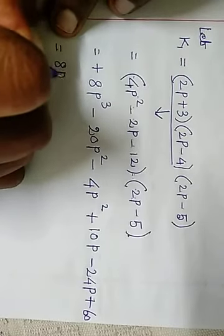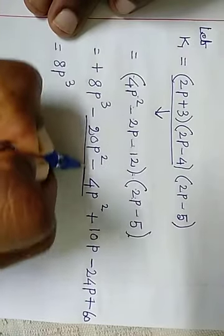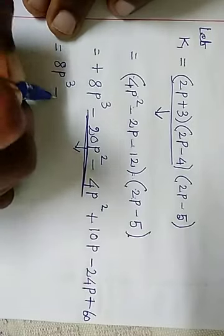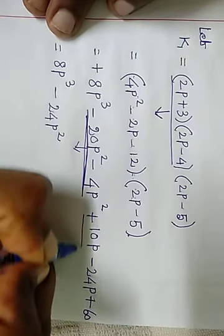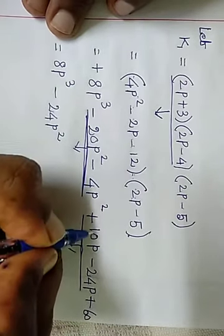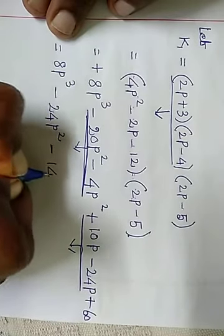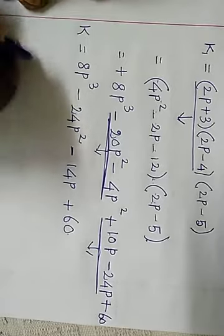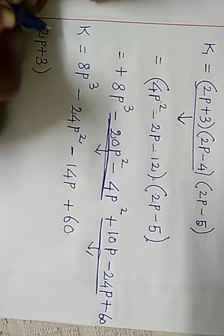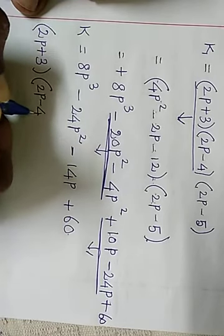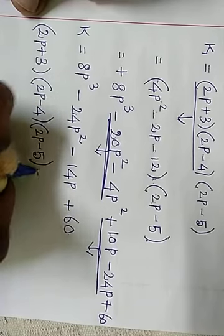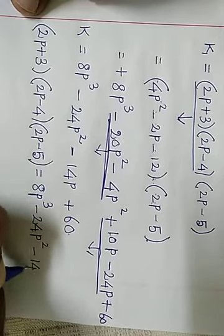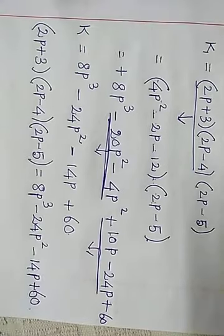Listen please, students. 8p cube. P square terms: these 2 are like terms - minus 20p square, minus 4p square, minus 24p square. Then p terms: these 2 are like terms - plus 10p minus 24p is minus 14p. Plus 60. The easy final answer. The given question: 2p plus 3 into 2p minus 4 into 2p minus 5 is equal to 8p cube minus 24p squared minus 14p plus 60. Easy - that is the final answer. Thank you students.